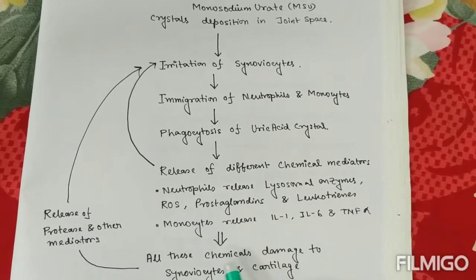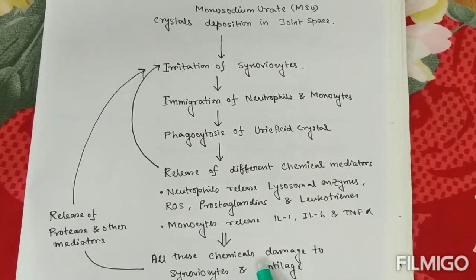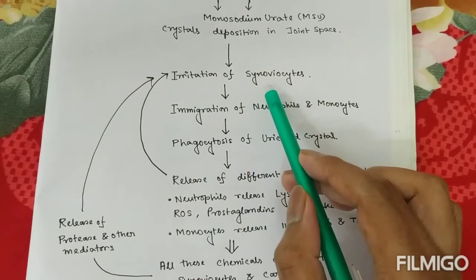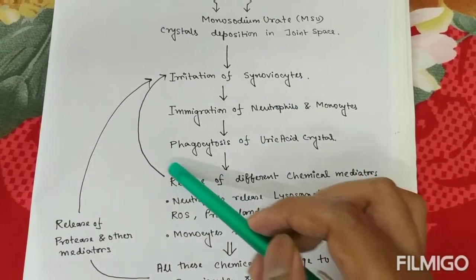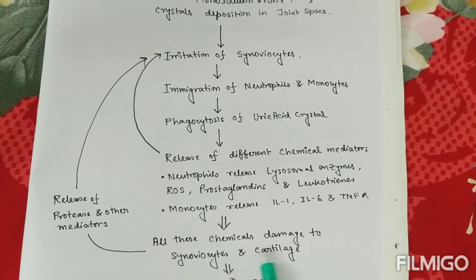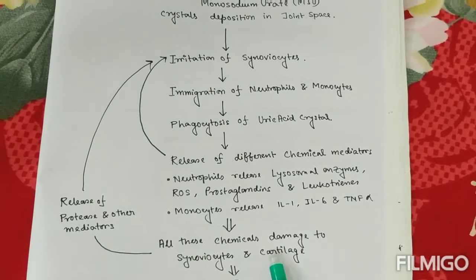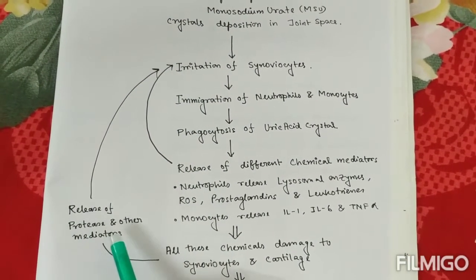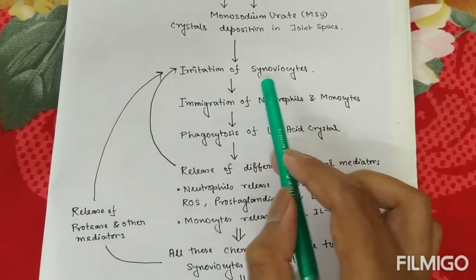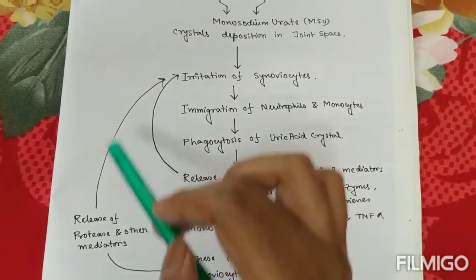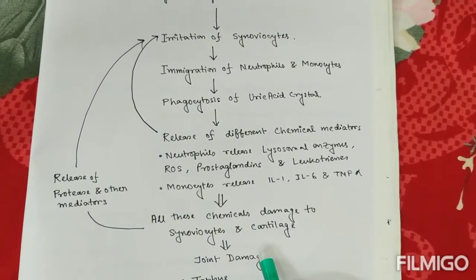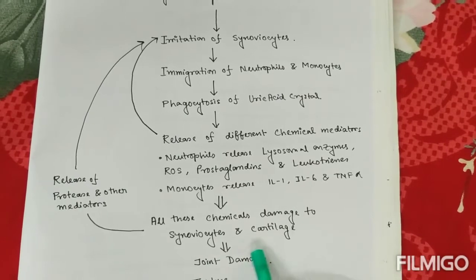They will damage the synoviocytes and cartilage. Apart from this, they will also irritate the synoviocytes, making this a vicious cycle. Due to the damage of synoviocytes and cartilage, some proteases and other mediators are released, which will further irritate the synoviocytes, making it a more vicious cycle, and ultimately they will cause joint damage.